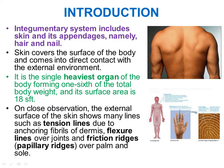Taking a close observation of the skin — looking at the palm of the hand — it has an external surface which shows lines such as tension lines. These tension lines are due to anchoring fibrils of the dermis. Skin also has flexure lines, which are present over the joints, allowing us to easily flex our joints.